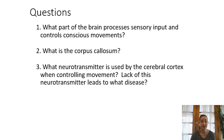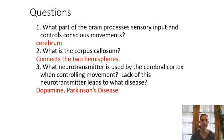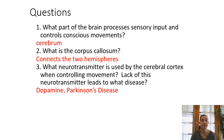Final review: the part of the brain that processes sensory input and controls conscious movement is the cerebrum, where the post-central and pre-central gyri handle sensory and motor information respectively. The corpus callosum is the structure connecting the two hemispheres of the brain. The neurotransmitter that controls movement is dopamine, and lack of dopamine leads to Parkinson's disease. Hope that helped your understanding of the brain — let me know if you have any questions.